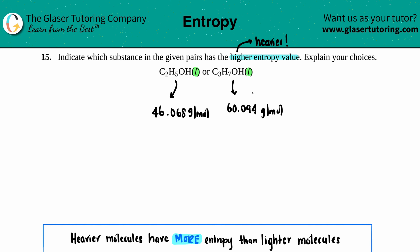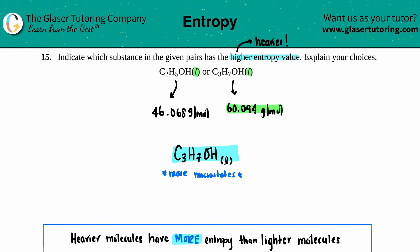So which one has the higher entropy value? It's the one with the higher molecular weight. 60.094 is a higher molar mass than 46.068, so C₃H₇OH liquid wins. To explain your choice: the heavier molecule has more microstates, and more microstates means higher probability and therefore higher entropy. The molecular weight explanation works well too.